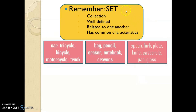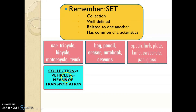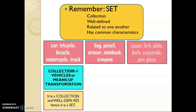Always remember the following: for a collection to be a set, first it must be a collection, and second it must be well-defined — related to one another or having common characteristics. Now let's have another collection of objects: car, tricycle, bicycle, motorcycle, and truck. Can you identify what collection of things this is? This is a collection of vehicles or means of transportation, so it is a collection and at the same time well-defined — therefore it is a set.